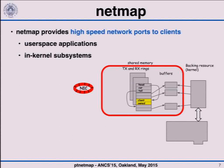This is essentially the NetMap API. The advantages are: you can have batching because you can move the head pointer by more than one slot, so in one system call you can send several packets. There is no packet copy because the memory is shared. And many overheads involved in packet processing are removed — for example, memory allocation is done at the start of the application. The per-packet overhead is very small, which is what enables NetMap to achieve line rate on 10 gigabit NICs or even 56 million packets per second in transmission on 40 gigabit NICs.